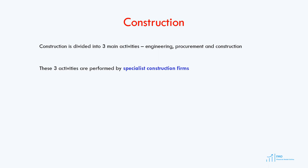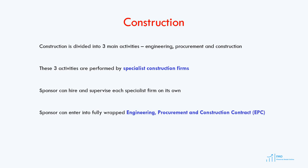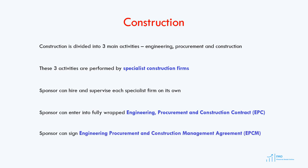There are three alternatives for the sponsor to carry out the construction contracts. First, the sponsor can hire and supervise each specialist firm on its own. Another alternative is to enter into an engineering, procurement, and construction contract with an EPC firm. And finally, what we usually see in the mining industry is that the sponsor enters into an engineering, procurement, and construction management agreement, or EPCM agreement, with the EPCM firm. The first alternative is not a popular option in project finance transactions. So let's review the differences between the EPC and EPCM contracts now.